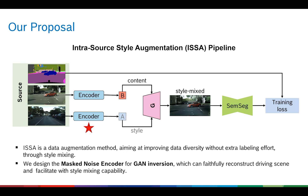The encoder can faithfully reconstruct the driving scene while disentangling content and style information for further style manipulation. The style-mixed image has well-preserved semantic content, and thus the GAN inversion annotation map can be reused during training.